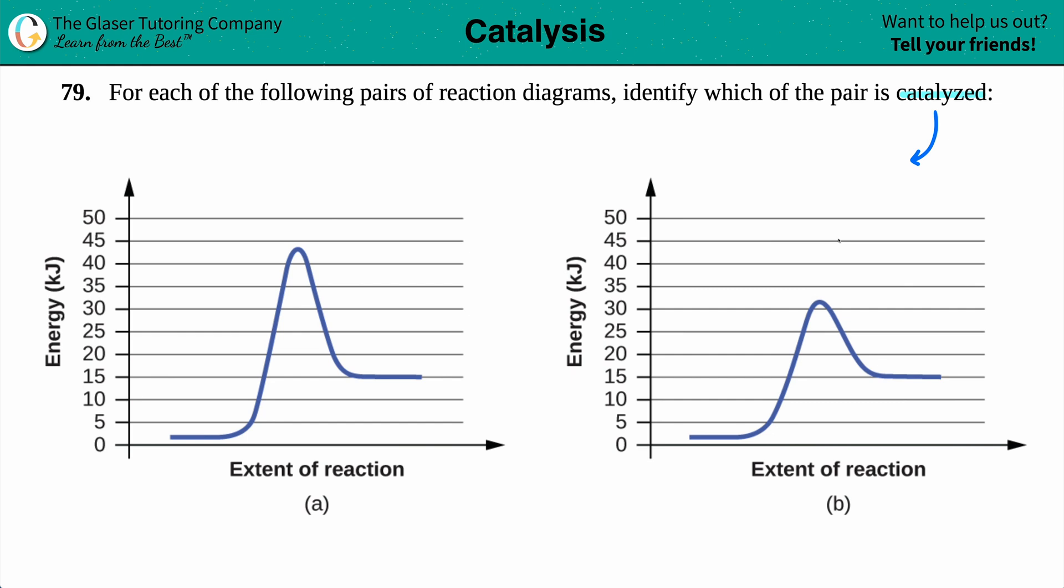A catalyzed reaction will lower the transition state. Now the transition state by definition is the tippy point, or the peaks, because you can have multiple transition states depending on how many steps the reaction has. So it's always the tippy point or the individual peaks if you have multiple steps.